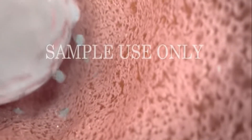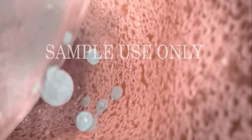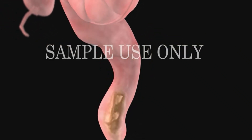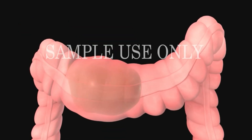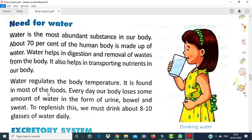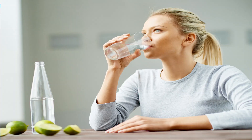Water is the most abundant substance in our body — about 70 percent of the body is made up of water. Water helps in digestion and removal of waste from the body. It also helps in transporting nutrients and regulating body temperature. Every day our body loses water through urine, bowel movements, and sweat, so we must drink about 8 to 10 glasses of water daily.